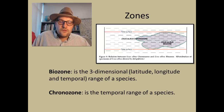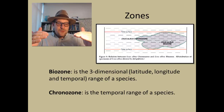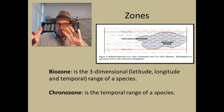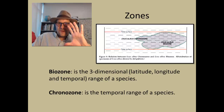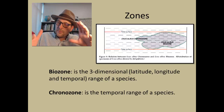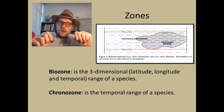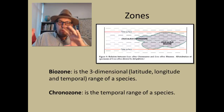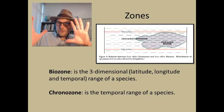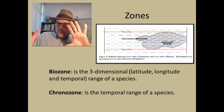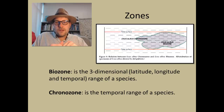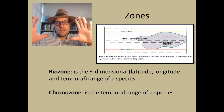A biozone is a three-dimensional zone — latitudinal, longitudinal, and temporal — a body of rock in which a particular species or group of species may occupy. A biozone is where we have a geographic but also stratigraphic distribution of various organisms, or a particular organism. Often a biozone will be defined by a species, so in this case we have the Exodus albus biozone.